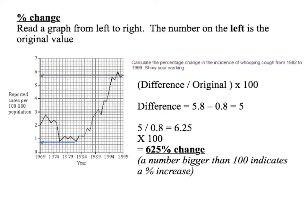Percentage change could be quite tricky, but it's a common calculation. When doing percentage change, the most difficult thing is knowing what the original value is. If you're doing a general percentage change, read the graph from left to right or read a table from top to bottom, with the left-hand number being the original value. If you're working out a percentage increase, then the lower number is the original. If you're working out a percentage decrease, then the higher number is the original value.